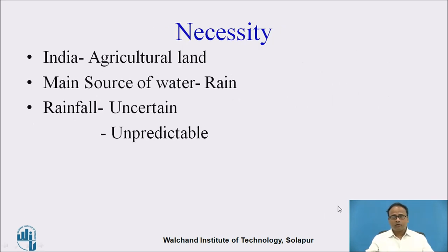What is the necessity of rainwater harvesting system? As we know, for the cultivation of land we require water, and the main source of water is rain. Rainfall in our country is uncertain and unpredictable, so we should conserve the water, and for that we have to implement this rainwater harvesting system.